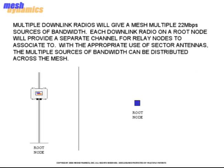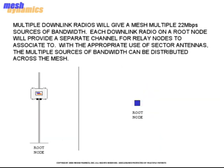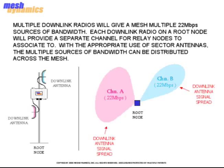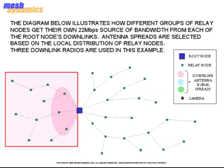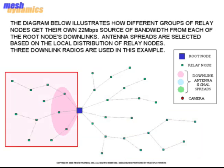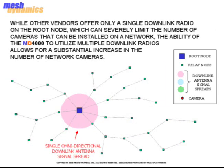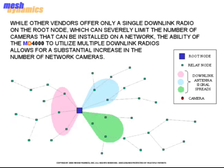Multiple downlink radios give the mesh multiple 22 Mbps sources of bandwidth. Each downlink radio on a root node will provide a separate channel for relay nodes to associate to. With the appropriate use of sector antennas, the multiple sources of bandwidth can be distributed across the mesh. The diagram below illustrates how different groups of relay nodes get their own 22 Mbps source of bandwidth from each of the root node's downlinks. Antenna spreads are selected based on the local distribution of relay nodes — three downlink radios are used in this example. While other vendors offer only a single downlink radio on the root node, which can severely limit the number of cameras on a network, the ability of the MD-4000 to utilize multiple downlink radios allows for a substantial increase in the number of network cameras.